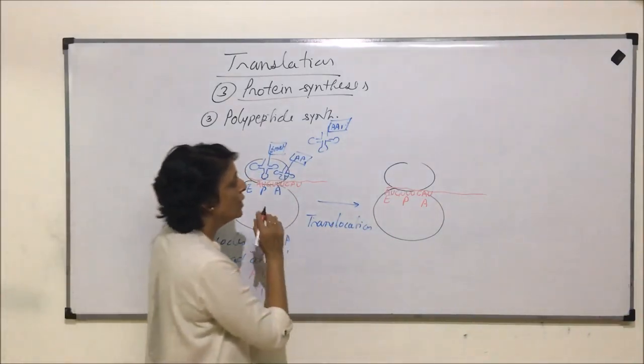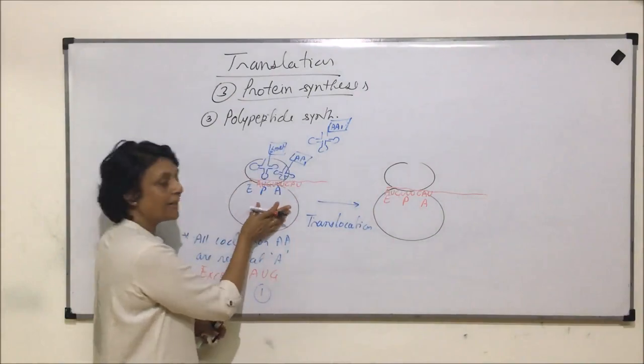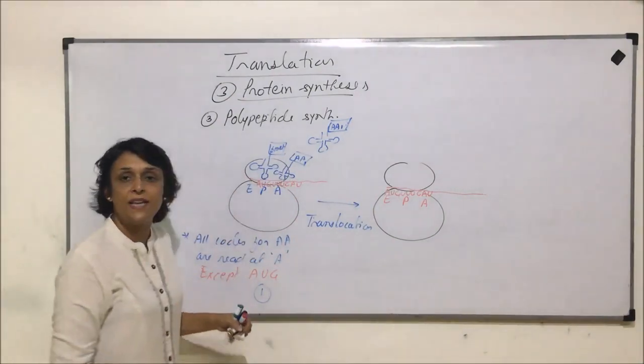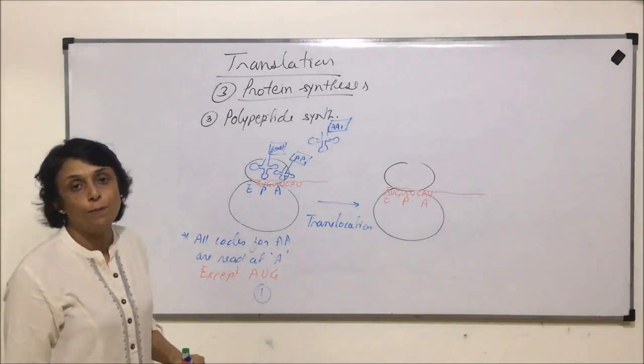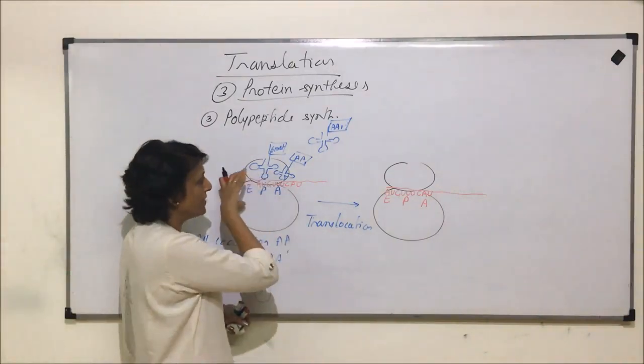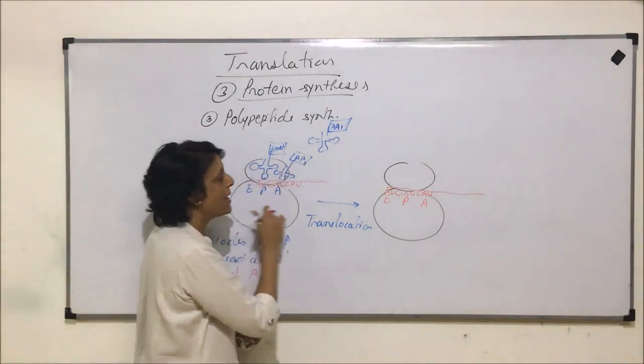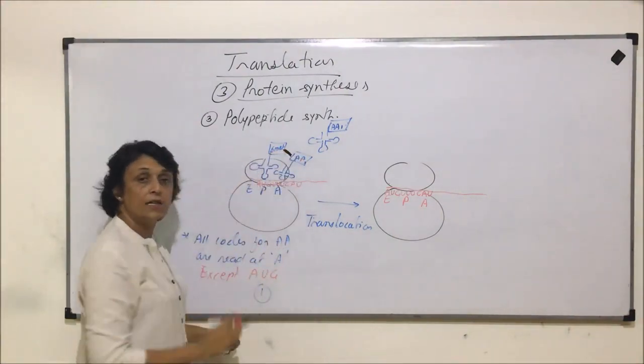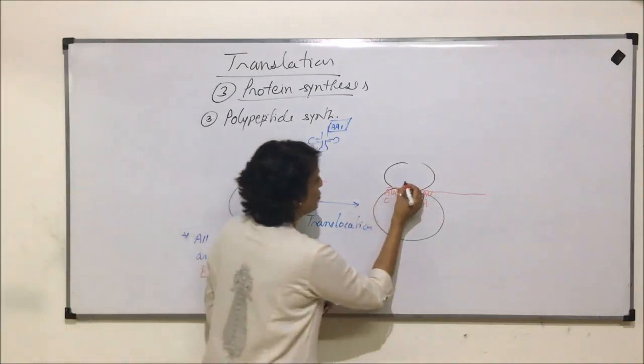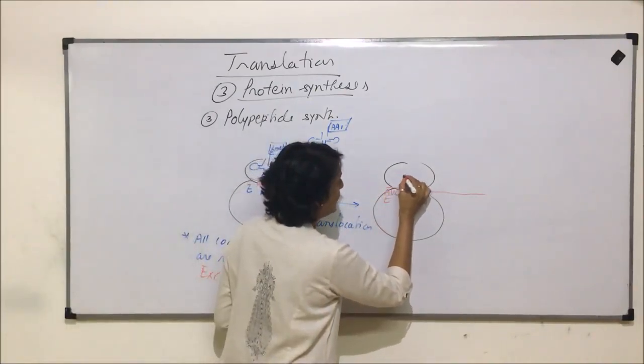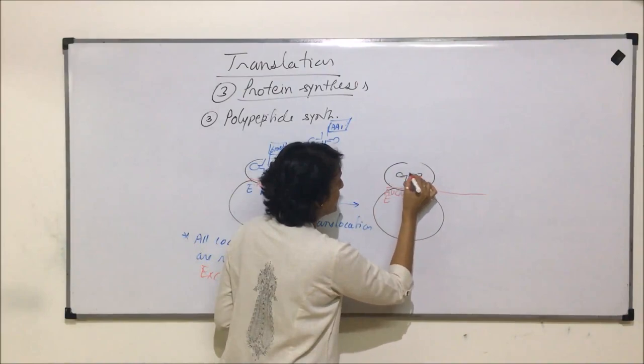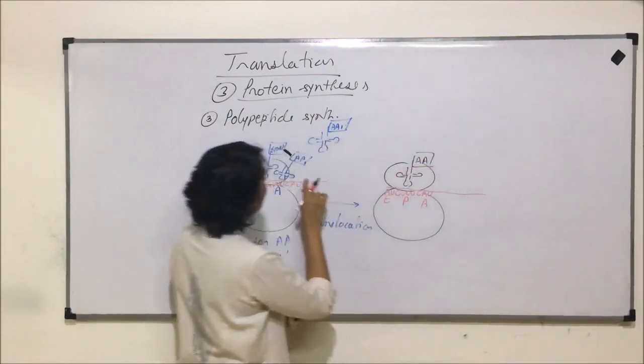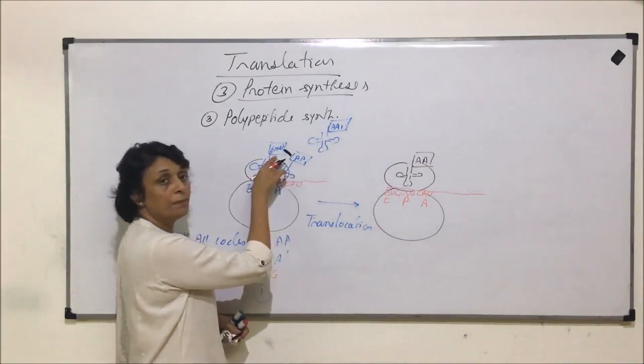But before that, what happens exactly at the P site? We said at P site, peptide bond formation takes place. So when the ribosome is sliding on mRNA, between these two amino acids, a peptide bond is formed. So let us draw these tRNAs here. Here, this is our amino acid 1 after methionine. Or to avoid confusion, let us say this is amino acid 2.